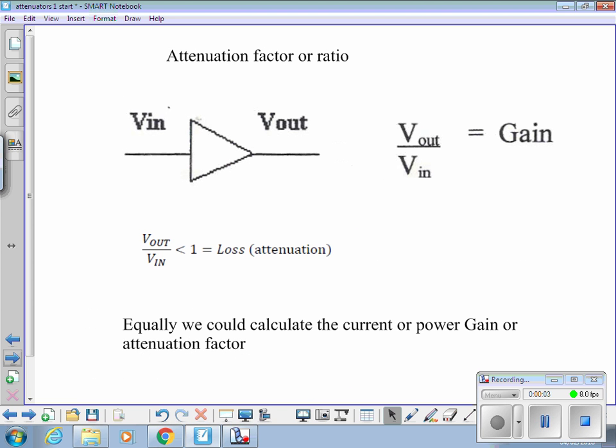Attenuation factor or ratio. That symbol there, the triangle with the in and out, is a typical schematic symbol for an amplifier of some sort, something that will provide gain.